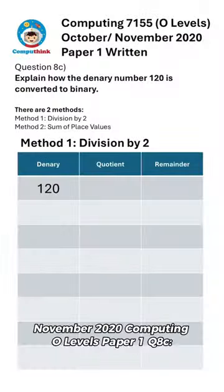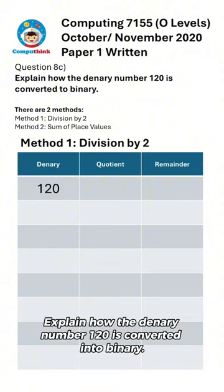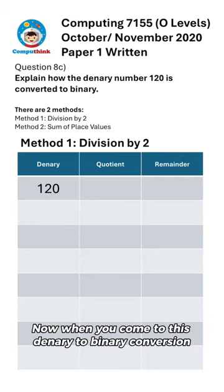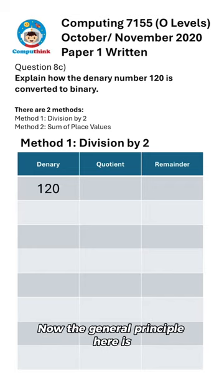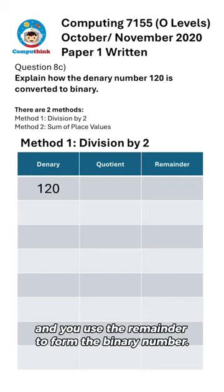So over here, we have November 2020 Computing O-Levels Paper 1, Question 8C. Explain how the denary number 120 is converted into binary. Now when you come to this denary to binary conversion, there are two methods. We'll use the division by two method here. The general principle is you keep dividing the number by two and you use the remainder to form the binary number.